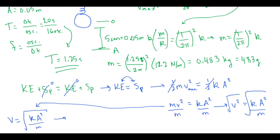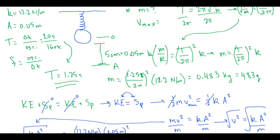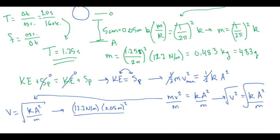So now when we plug in our k, we said was 12.2 newtons per meter times the amplitude in meters, which we said was 0.05 meters. And then mass was 0.483 kilograms. And then we're going to square root all of that. So that gives us a Vmax of 0.251 meters per second. And if we change that to centimeters per second, we get 25.1 centimeters per second as our maximum velocity.